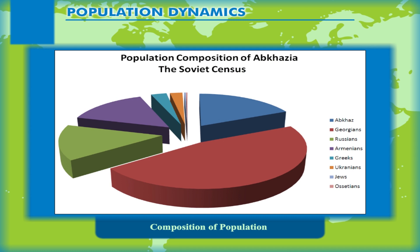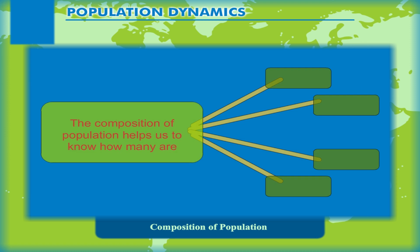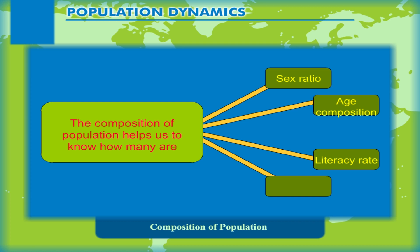Population composition refers to the structure of the population. The composition of population helps us to know how many are males or females (sex ratio), which age group (age composition) they belong to, how educated (literacy rate and level) they are, and what type of occupations (occupational structure) they are employed in, and what are their income levels and health conditions.